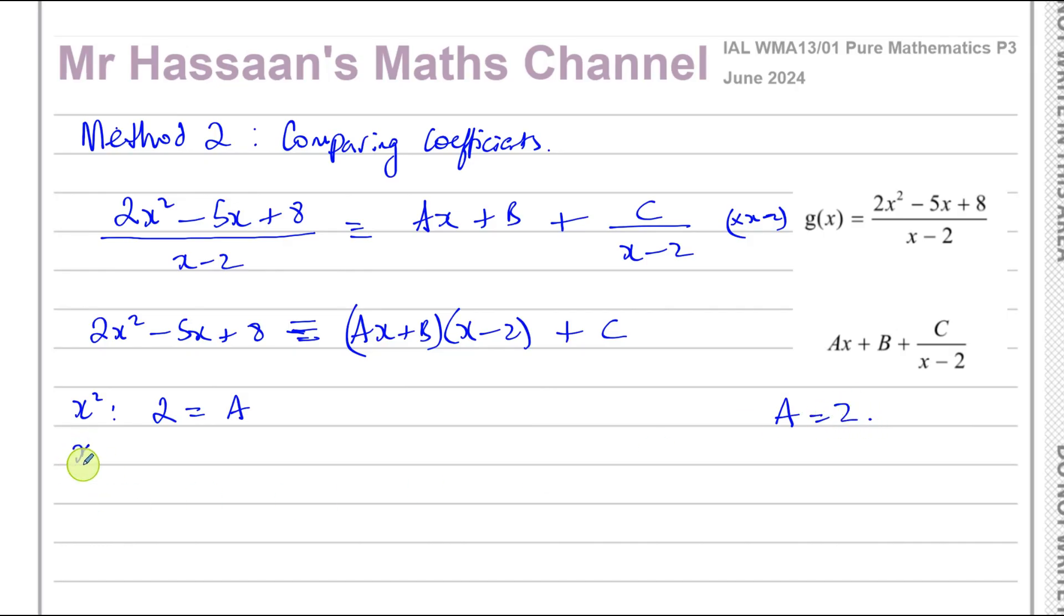And if we compare the coefficients of x, the x term on this side is negative 5. On this side, the x term will be when you do Ax times minus 2, which is minus 2Ax, and when you do B times x, which is plus B. Now we already know A is equal to 2. So from here we can say minus 5 is equal to minus 2 times 2 plus B. So we have minus 5 is equal to minus 4 plus B. Add 4 to both sides. B is equal to negative 1.